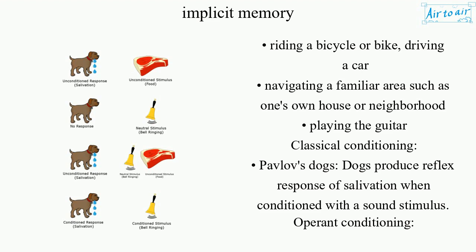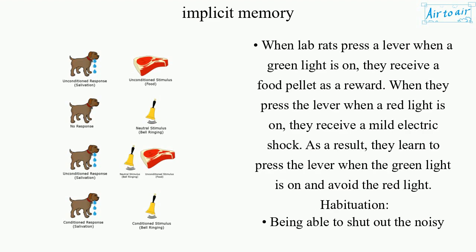An example of classical conditioning is Pavlov's dogs, where dogs produce a reflex response of salivation when conditioned with a sound stimulus. For operant conditioning, when lab rats press a lever when a green light is on, they receive a food pellet as a reward. When they press the lever when a red light is on, they receive a mild electric shock. As a result, they learn to press the lever when the green light is on and avoid the red light.